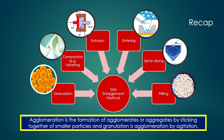We also discussed several methods of size enlargement of solid material. Those are granulation, compaction, extrusion, sintering, spray drying, and prilling. Agglomeration is also another important enlargement method, basically synonymous with the granulation process. Agglomeration is the formation of agglomerates — that means granules or aggregates — by sticking together smaller particles with the help of some binding liquids.